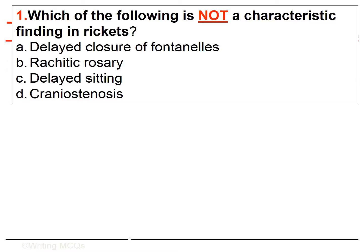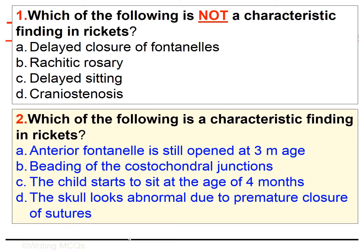Now let us see question number two: 'Which of the following is a characteristic finding in rickets?' Note that it is not asking about a negative thing — I'm not using 'not' or 'except.' The alternatives are: anterior fontanelle is still opened at three months of age; beading of the costochondral junctions; the child starts to sit at the age of four months; the skull looks abnormal due to premature closure of sutures.